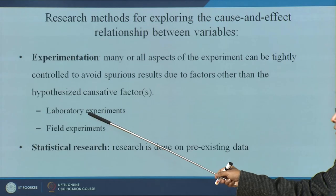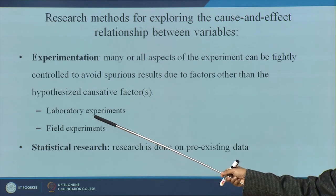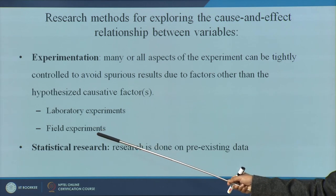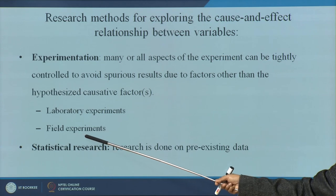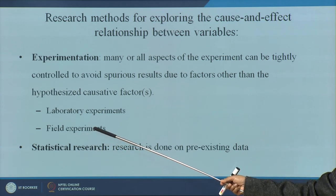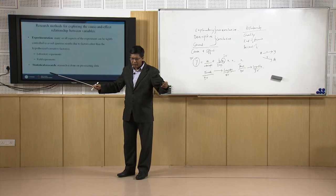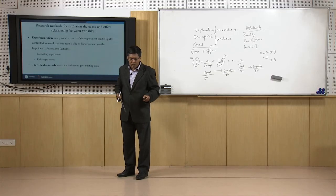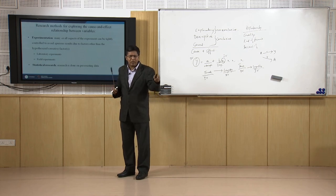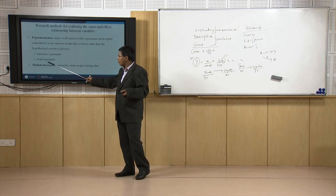When we talk about experimentation, we talk about lab experiments in engineering or a chemical lab, and field experiments done on the field. For example, a marketer wants to know whether changing the design of the store entry or changing the packaging of a product will affect sales — that is a field experiment.